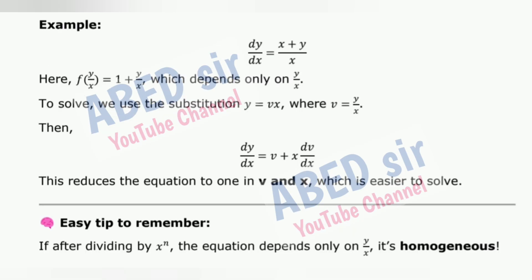Example: dy/dx = (x+y)/x. Here f(y/x) = 1 + y/x, which depends only on y/x. To solve, we use the substitution y = vx, where v = y/x. Then dy/dx = v + x·dv/dx. This reduces the equation to one in v and x, which is easier to solve. Easy tip to remember: if after dividing by x^n the equation depends only on y/x, it's homogeneous.